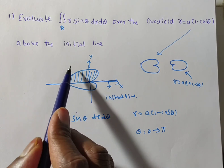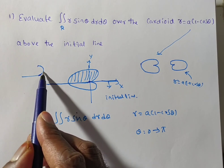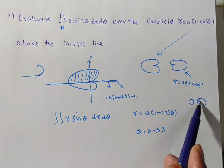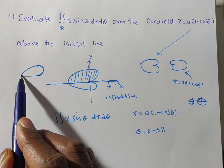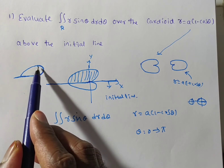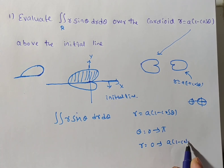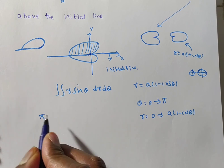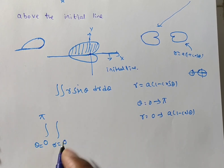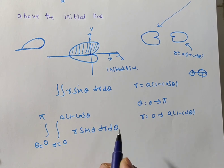For this cardioid shape, it is not a circle, hyperbola, or ellipse. The radius starts at 0 and moves along the curve, touching the initial line. So r varies from 0 to a(1 - cos θ). Therefore, the integral is set up with θ from 0 to π, r from 0 to a(1 - cos θ), integrating r sin θ dr dθ.